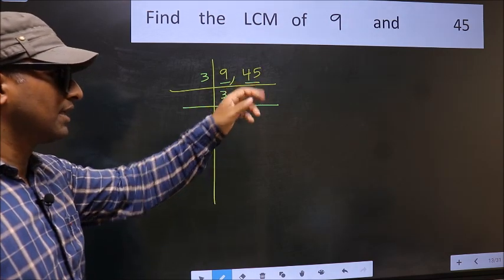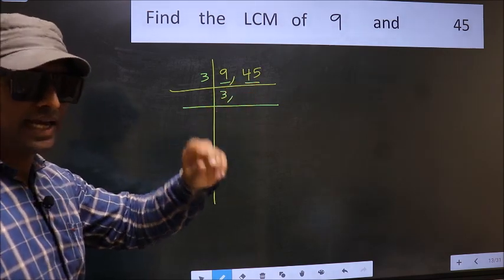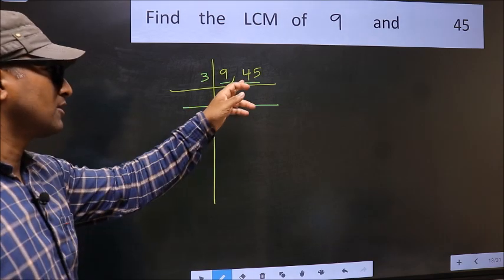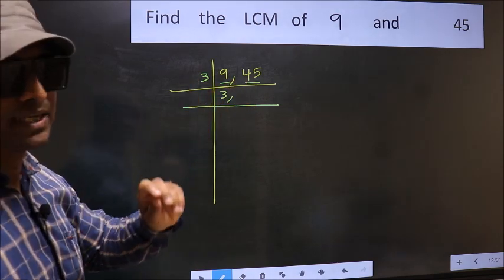4 plus 5, we get 9, and 9 is divisible by 3. So this number is also divisible by 3.